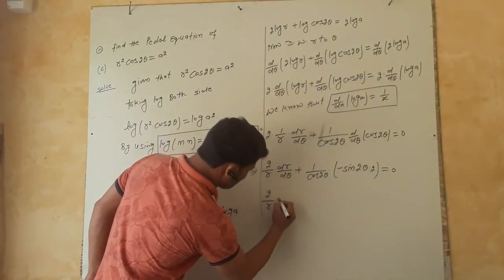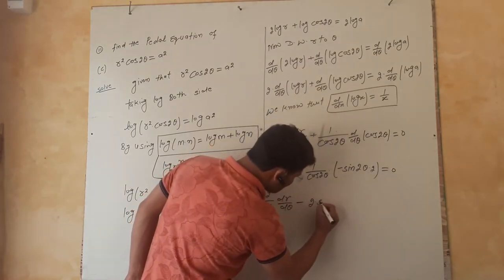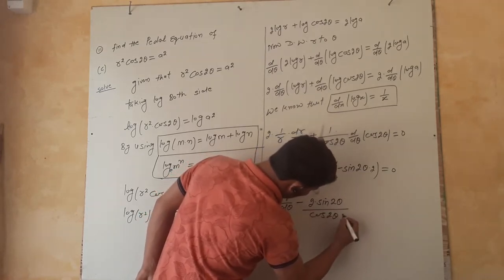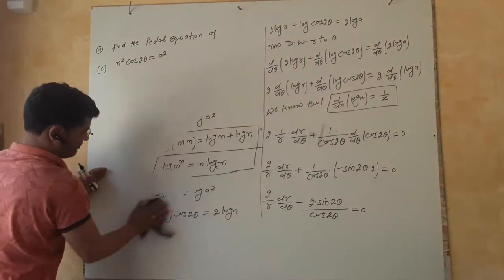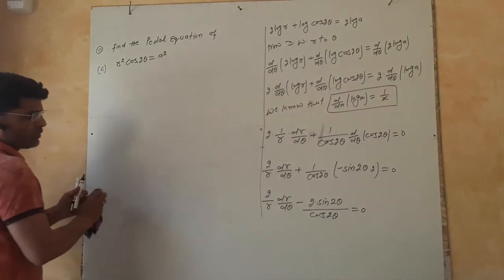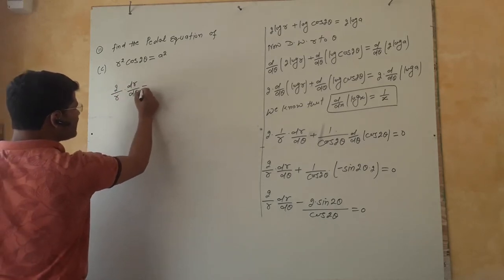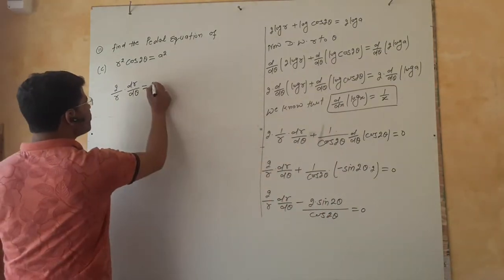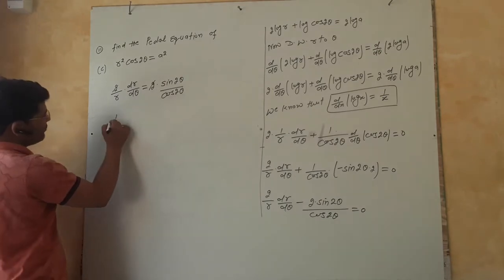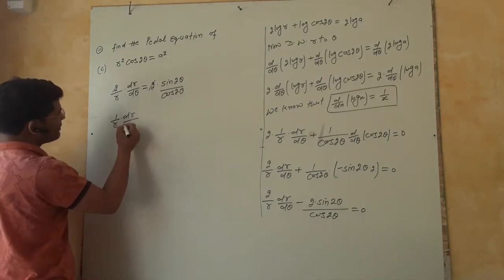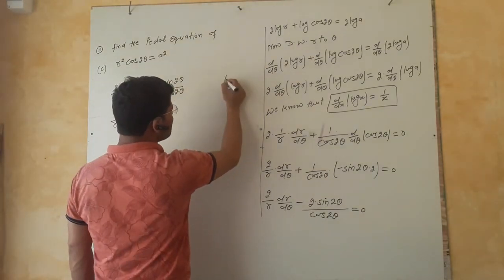This implies 2/R · dR/dθ minus 2 sin 2θ / cos 2θ equals 0. The 2s cancel, giving 1/R · dR/dθ equals sin 2θ / cos 2θ, which equals tan 2θ.